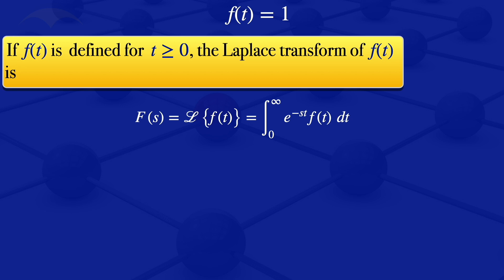But in this case, we are given that our f(t) is 1. So where we have f(t) in the formula, we put 1 and we get the integral from 0 to infinity of e^(-st) times 1 dt.